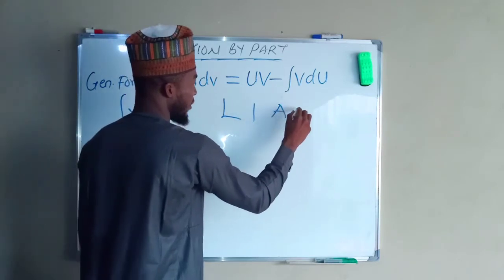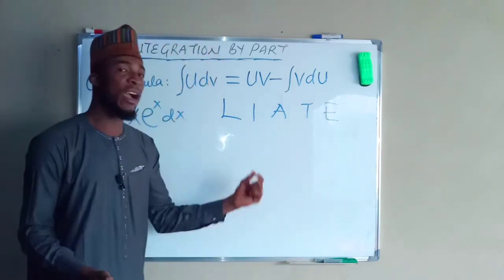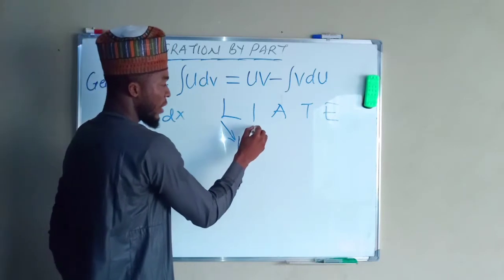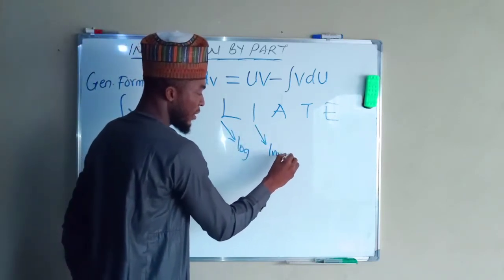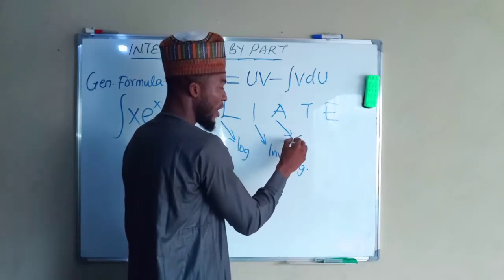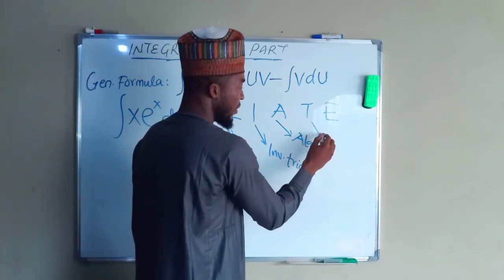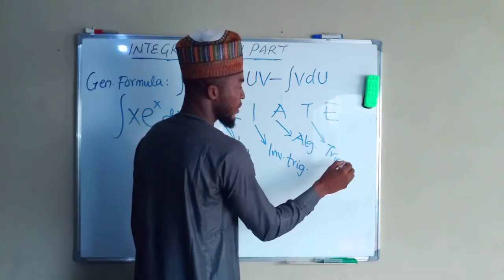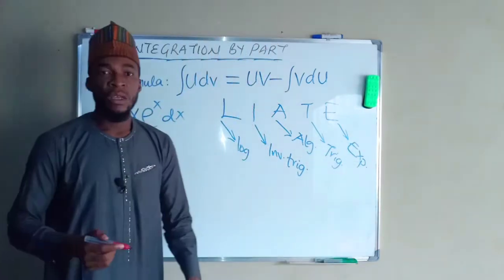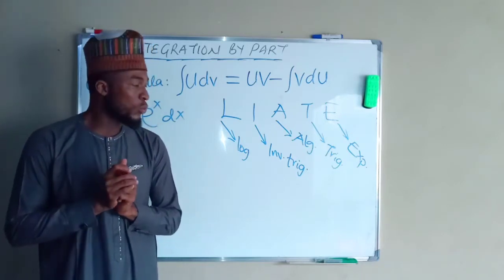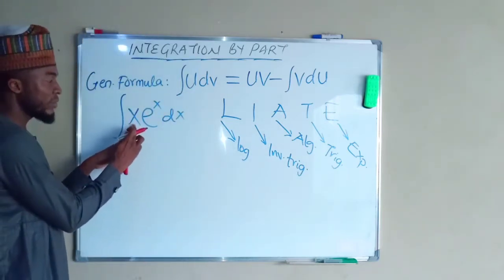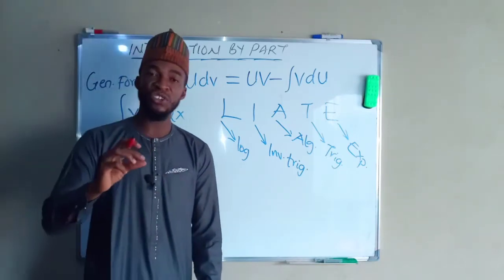LIATE: L stands for logarithmic functions, I stands for inverse trigonometric functions, A stands for algebraic functions, T stands for trigonometric functions, and E stands for exponential functions. To determine the function to set as u, you follow these functions in ascending order. For instance, here we have x·eˣ and we want to find out which function to set as u.